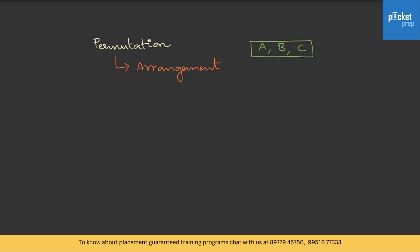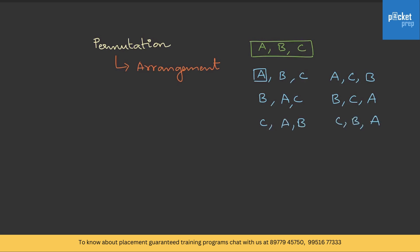Let's try to list out the different possible arrangements. The first is A-B-C. Now, I'll fix A, then swap B and C, so the second possibility is A-C-B. Then B-A-C, similarly B-C-A, then C-A-B, then C-B-A. So these are the six possible arrangements with three objects.